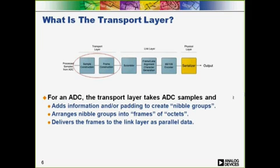The high-level blocks of the JESD204B transmitter are incorporated on an ADC. The transport layer brings in ADC samples that may or may not have had some digital processing applied, depending on the device and operating mode. Depending on the sample size and system requirements, the transport layer may need to add bits to form nibble groups. These nibble groups are arranged into frames of octets, and the frame data is then sent to the data link layer. The data, as it passes through the transport and data link layer, is parallel. The width of the parallel data bus depends on the architecture of the framer, and as JESD204 link rates increase, the parallel bus width increases to keep the digital processing clock at a manageable rate.